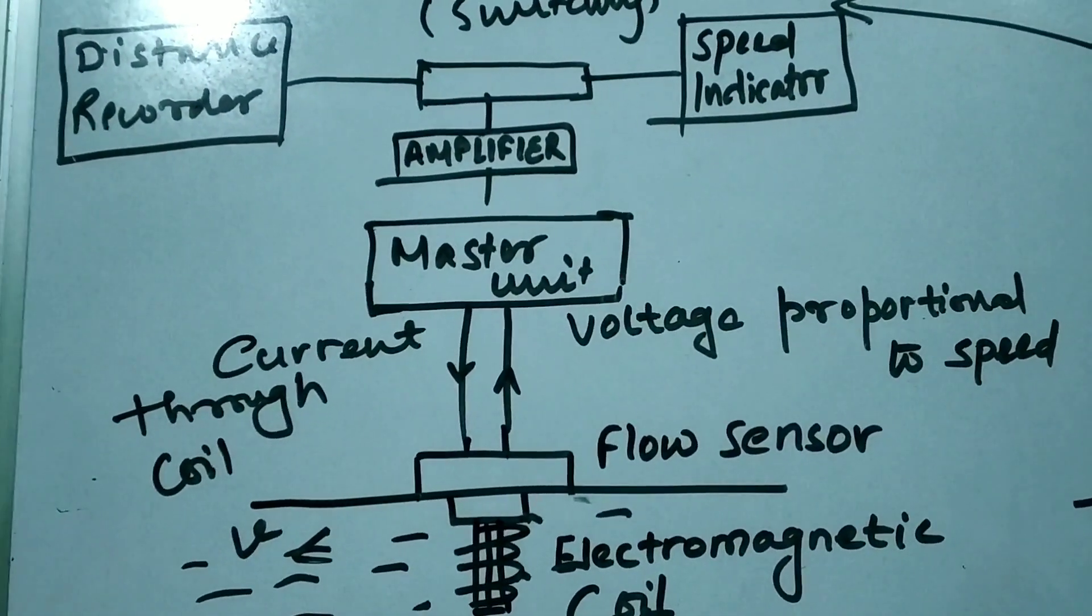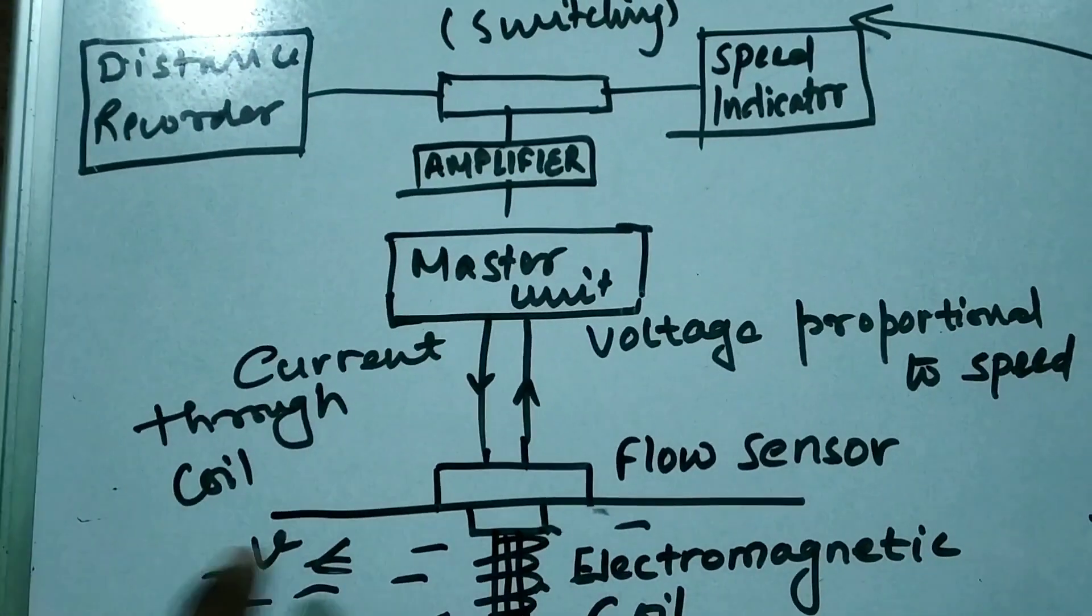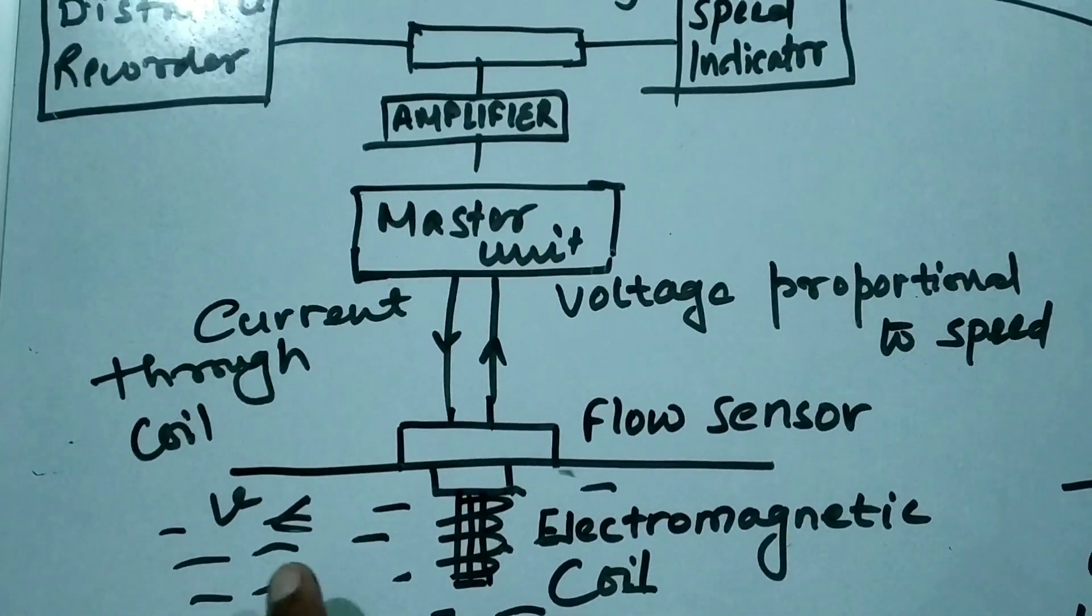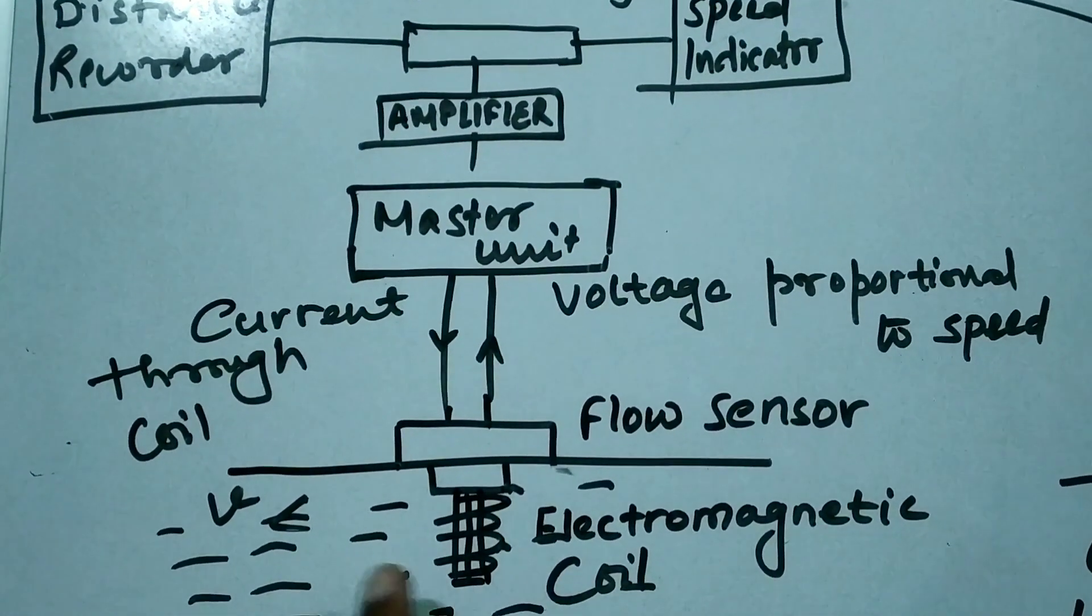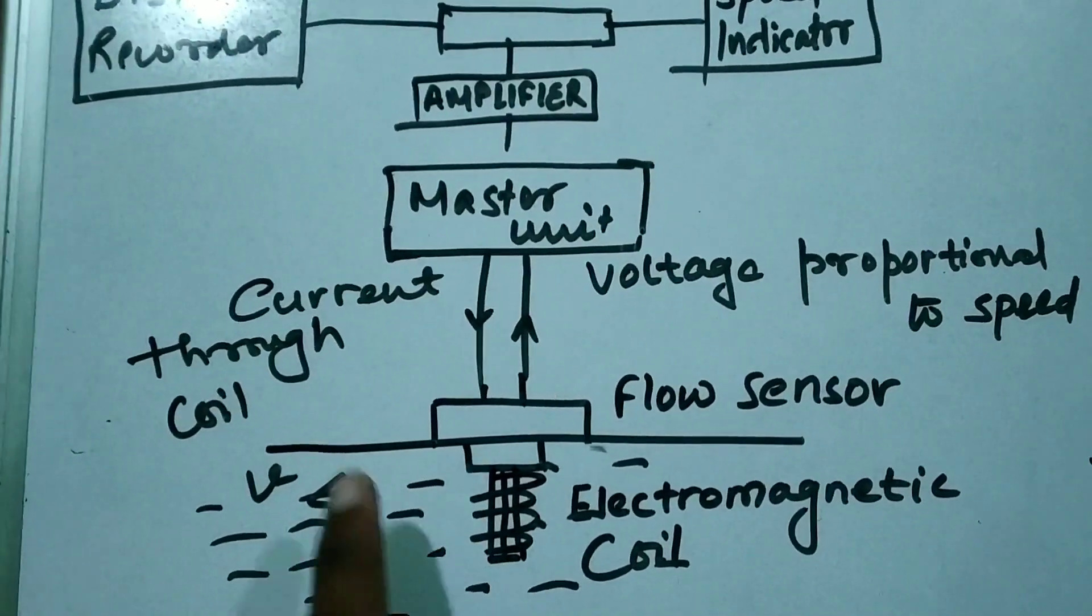Here the seawater acts as the conductor which moves horizontally. As you can see, the seawater is moving horizontally through the magnetic field, due to which an EMF is induced into it which is directly proportional to the speed of the vessel.